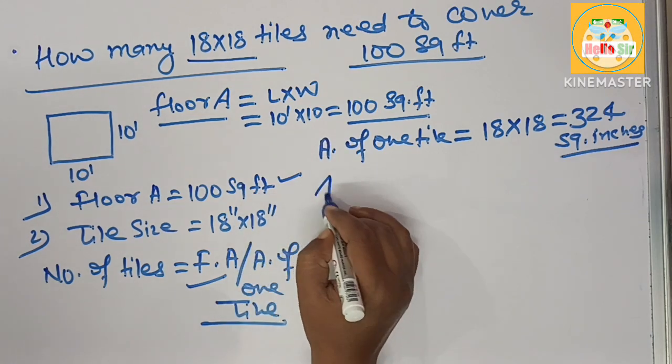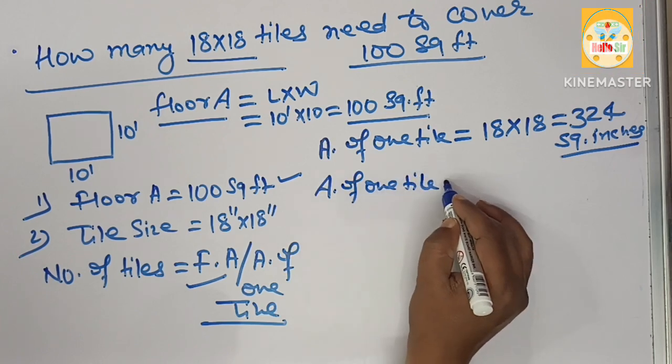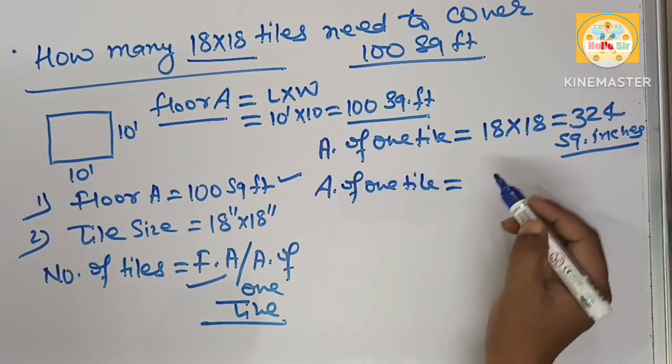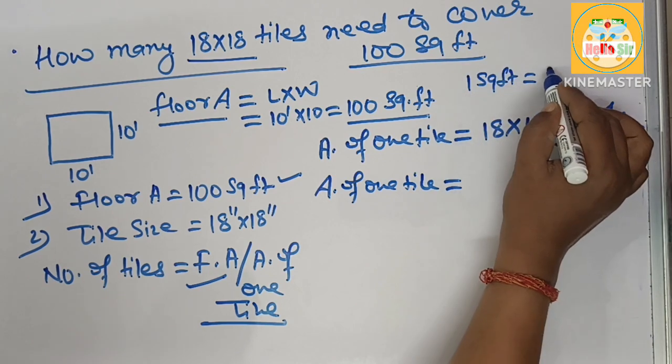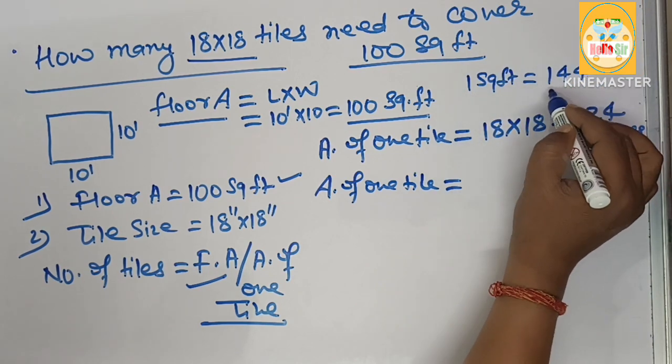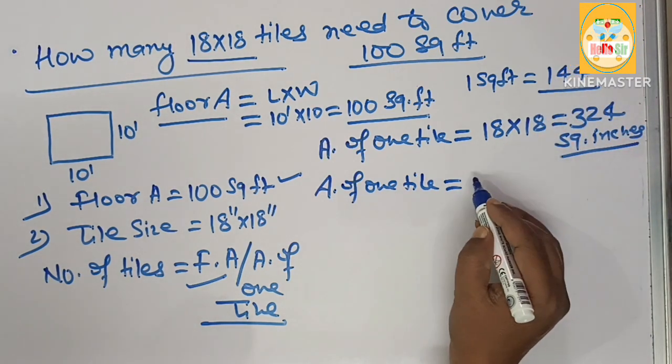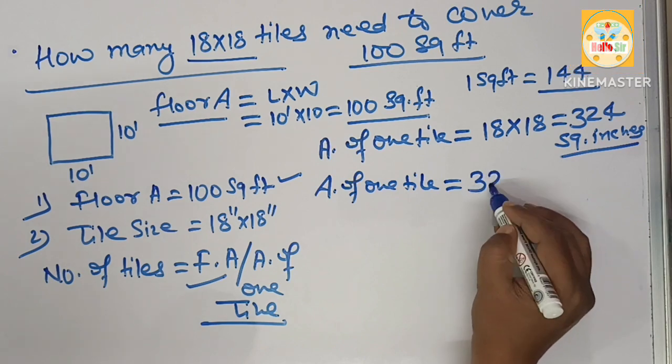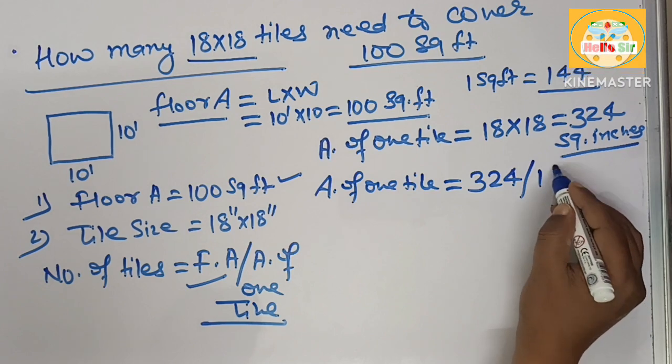But we have to find out the area of one tile in square foot. You know that one square foot is equal to 144 square inches. So you have to find out area of one tile by dividing 324 square inches by 144.